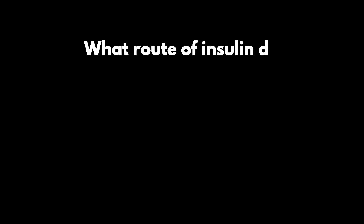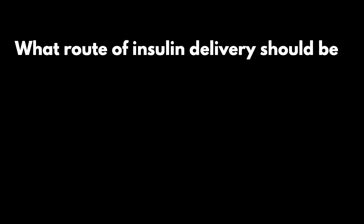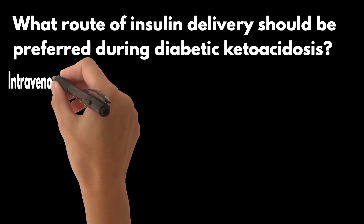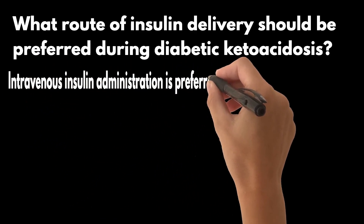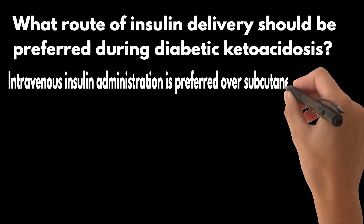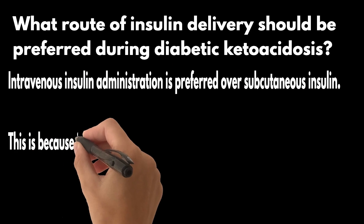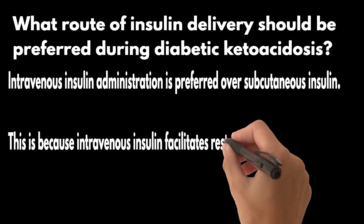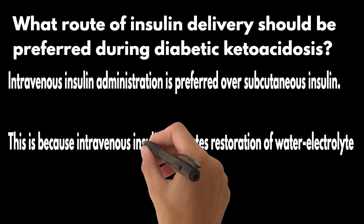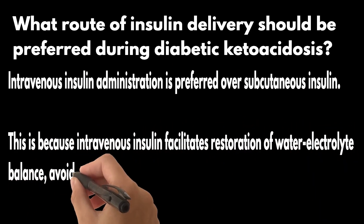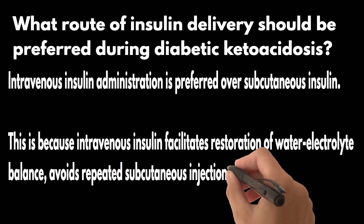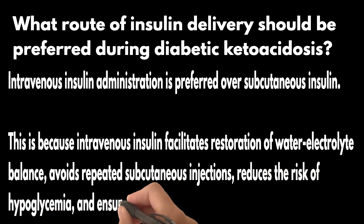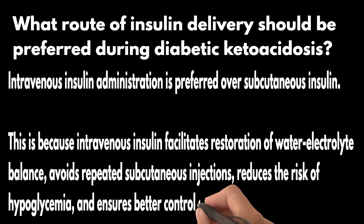What route of insulin delivery should be preferred during diabetic ketoacidosis? Intravenous insulin administration is preferred over subcutaneous insulin. This is because intravenous insulin facilitates restoration of water-electrolyte balance, avoids repeated subcutaneous injections, reduces the risk of hypoglycemia, and ensures better control of the insulin dose.